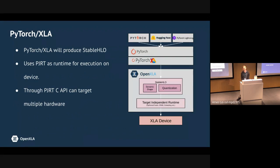PyTorch XLA is adopting PJRT as the runtime and has a C API that can target multiple hardware. There was a PR where Intel added a C API plug-in in open source for the XPU device. It's exciting to bring these two things together with PyTorch 2 and Torch XLA. Now I hand off to Shaheen to talk about the performance of Torch XLA and PyTorch 2.